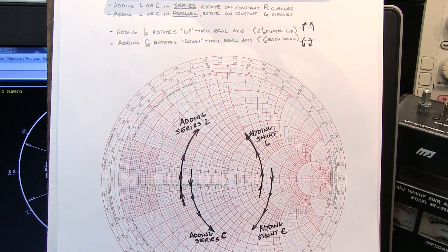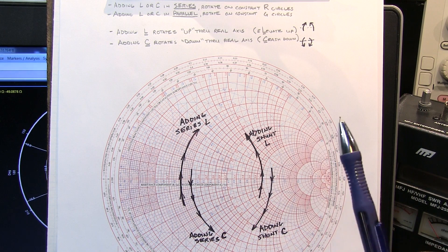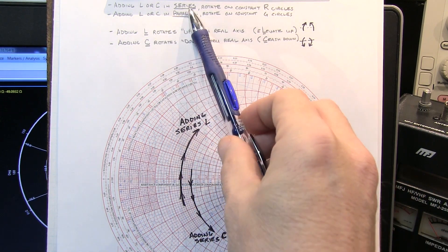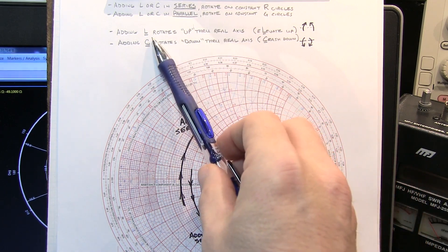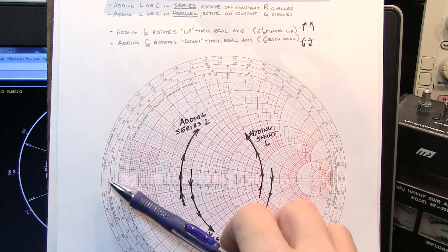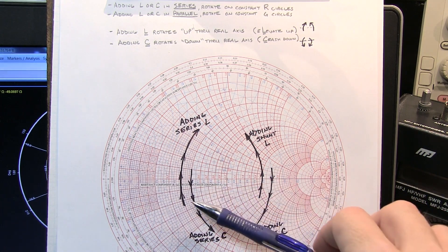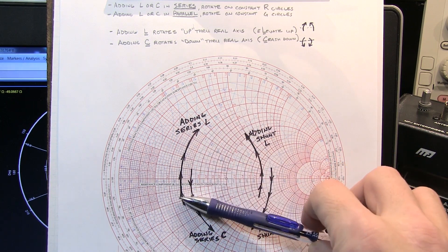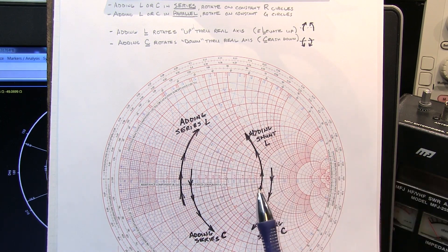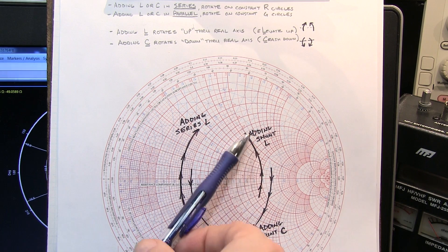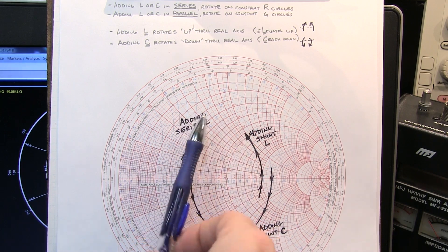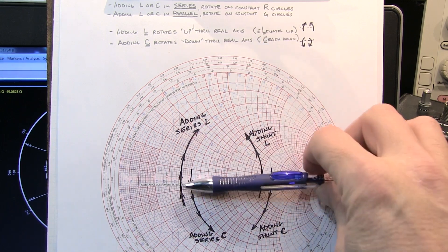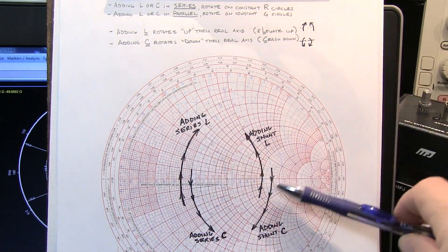So which way do we rotate along these circles? There's actually a little bit of a trick that I use. When we're talking about adding inductors, either in series or in parallel, that always rotates us up through the real axis, the real axis being the center axis here. So we can see adding a series inductor rotates us up in this direction along the constant resistance circles. Adding a shunt inductor rotates us up along the constant conductance circles in this direction. So you can think about this as adding an L, that's elevating us or elevating us up and rotating up on the Smith chart.